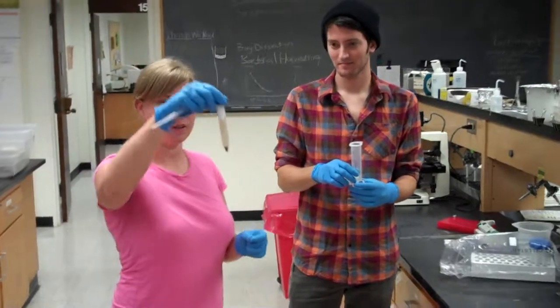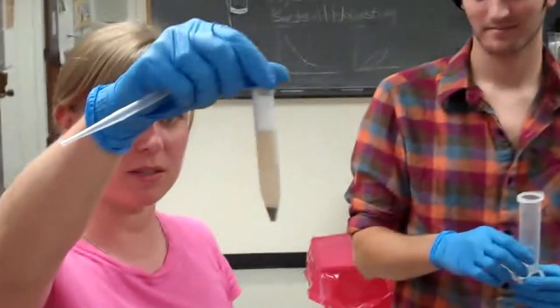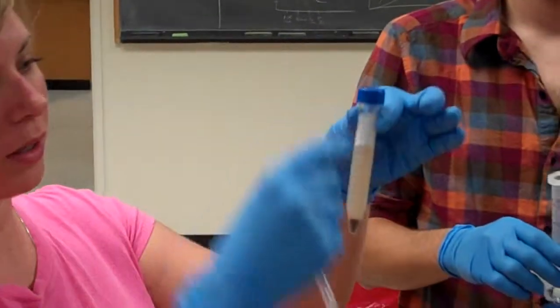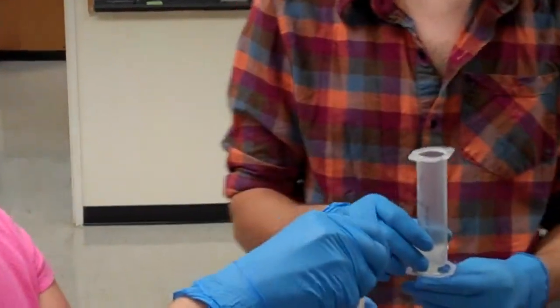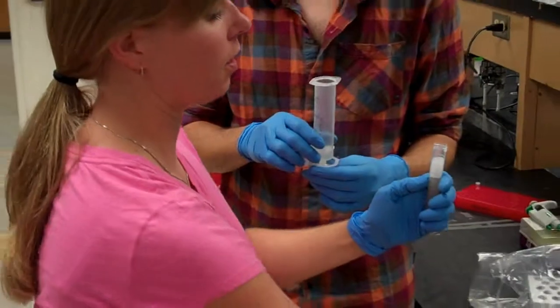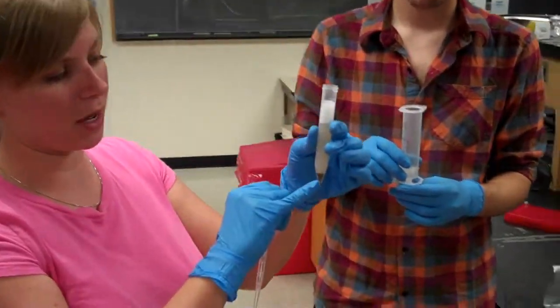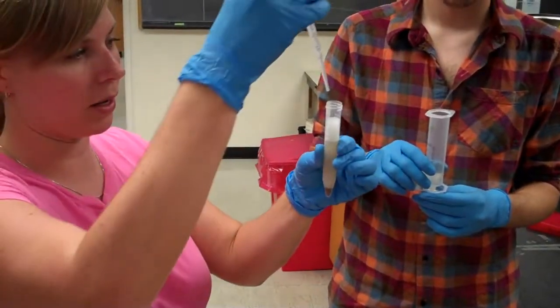After you centrifuge, your sample should look like this. So we want to collect all of this in here. Try and not get any of the white bubbles on top and definitely not any of the pellet at the bottom.